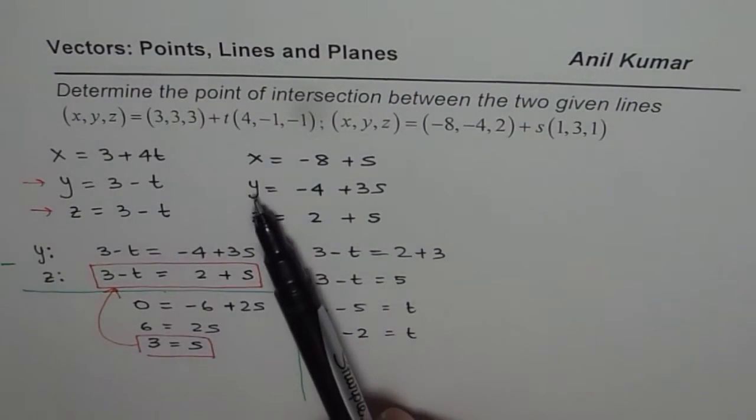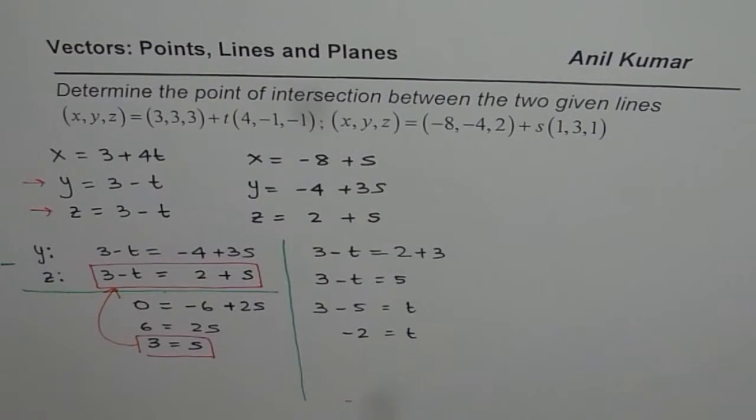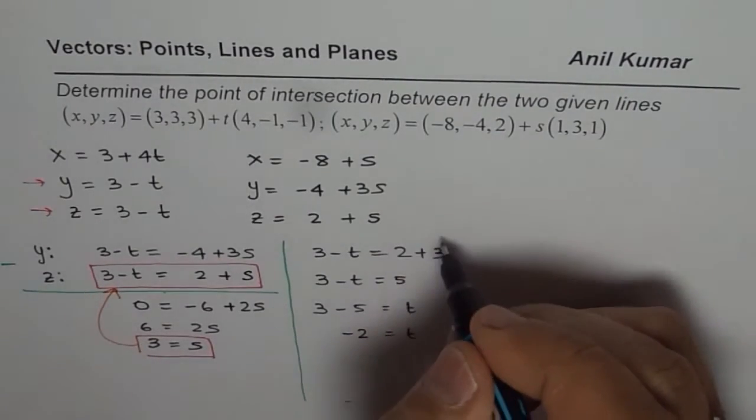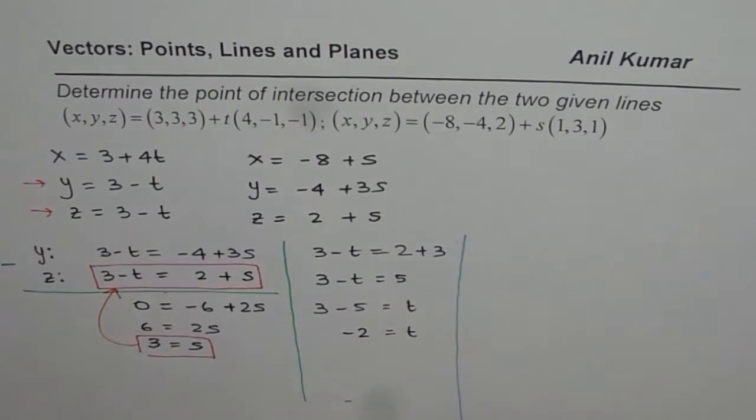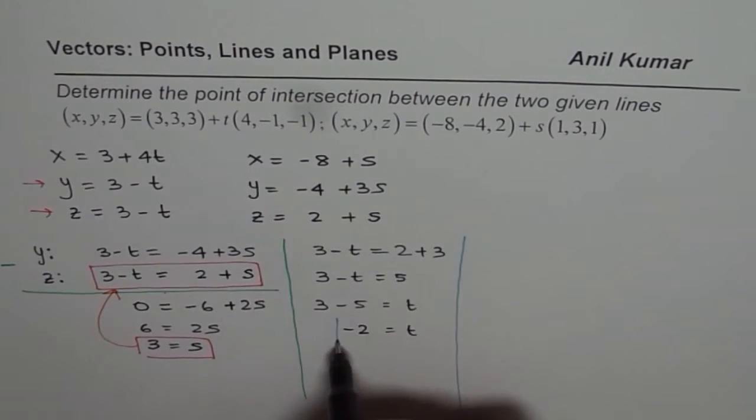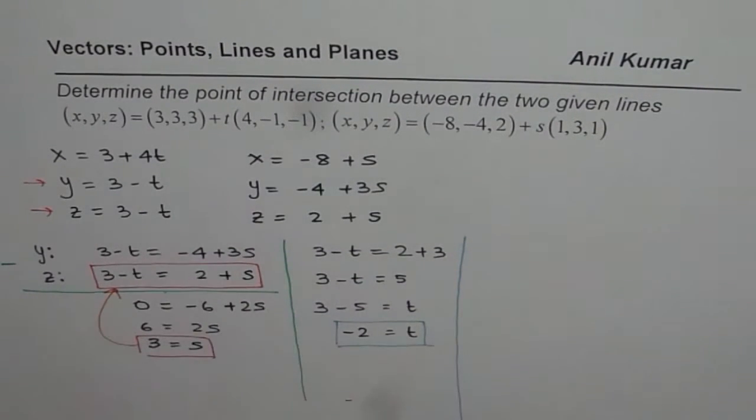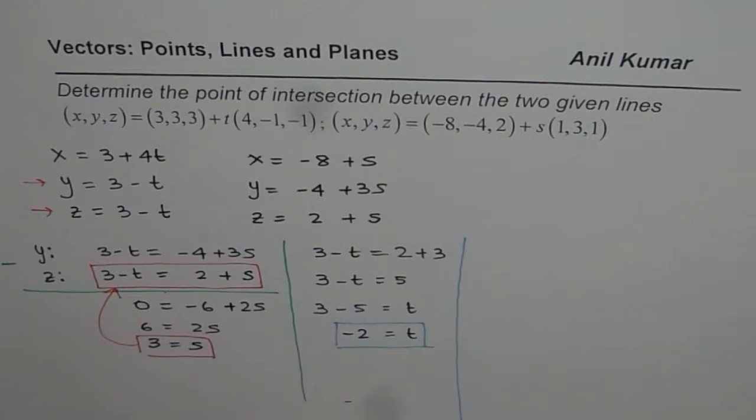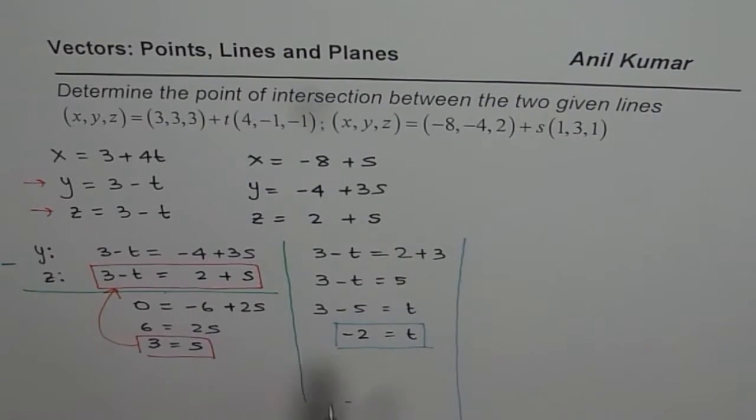So using the equations for y and z, we got the value for s and t. Now if that point really satisfies our equation, in that case, substituting this point in the original equation for both of them should give us the same value. Otherwise that is not a solution. You understand, right?